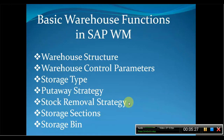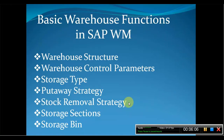Stock removal strategy is also a process that we can define for each storage type. For example, suppose in our warehouse we have storage bins from A7 to H8. At the time of picking — at the time of removal of material from those bins — we have to decide whether we start picking from A7 or H7. We can define our stock removal strategy based on LIFO, FIFO, or shelf life expiry date, depending on the requirement.